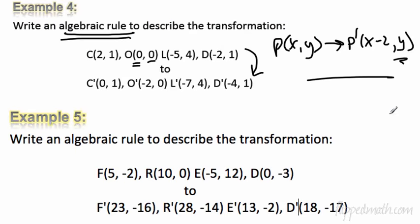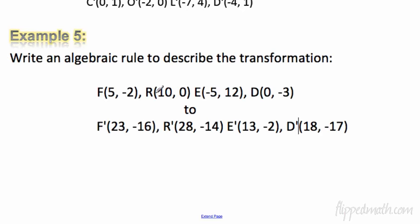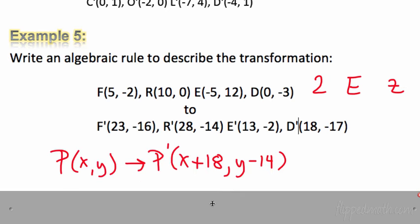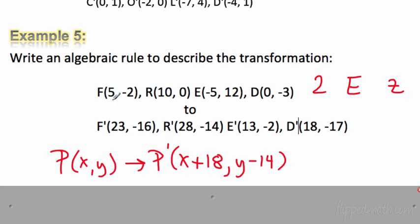Example 5: write an algebraic rule to describe the transformation. Adding 18 to all x-values and subtracting 14 from all y-values — check it, it works for all points. The rule is: (x, y) → (x + 18, y − 14). That's it — seriously easy! Go ahead and take the mastery check, do all the homework, check your answers, and we'll see you on the mastery check. Remember: it's nice to be important, but it's more important to be nice.